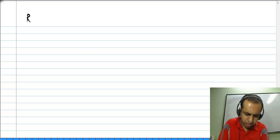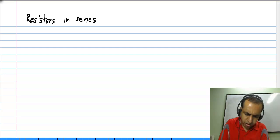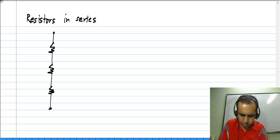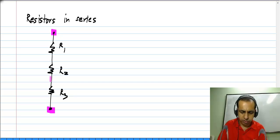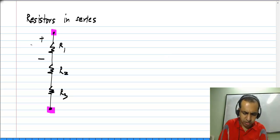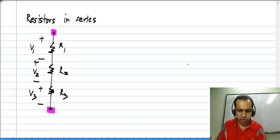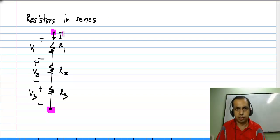Next we will look at resistors in series. I will take a number of resistors just for illustration — let me put down three of them. What we want to know is what is the effective behavior between the upper and lower terminals. For that, let me mark the voltages across each resistor and the current through each resistor. We know that the same current flows through all the resistors because of the series connection.